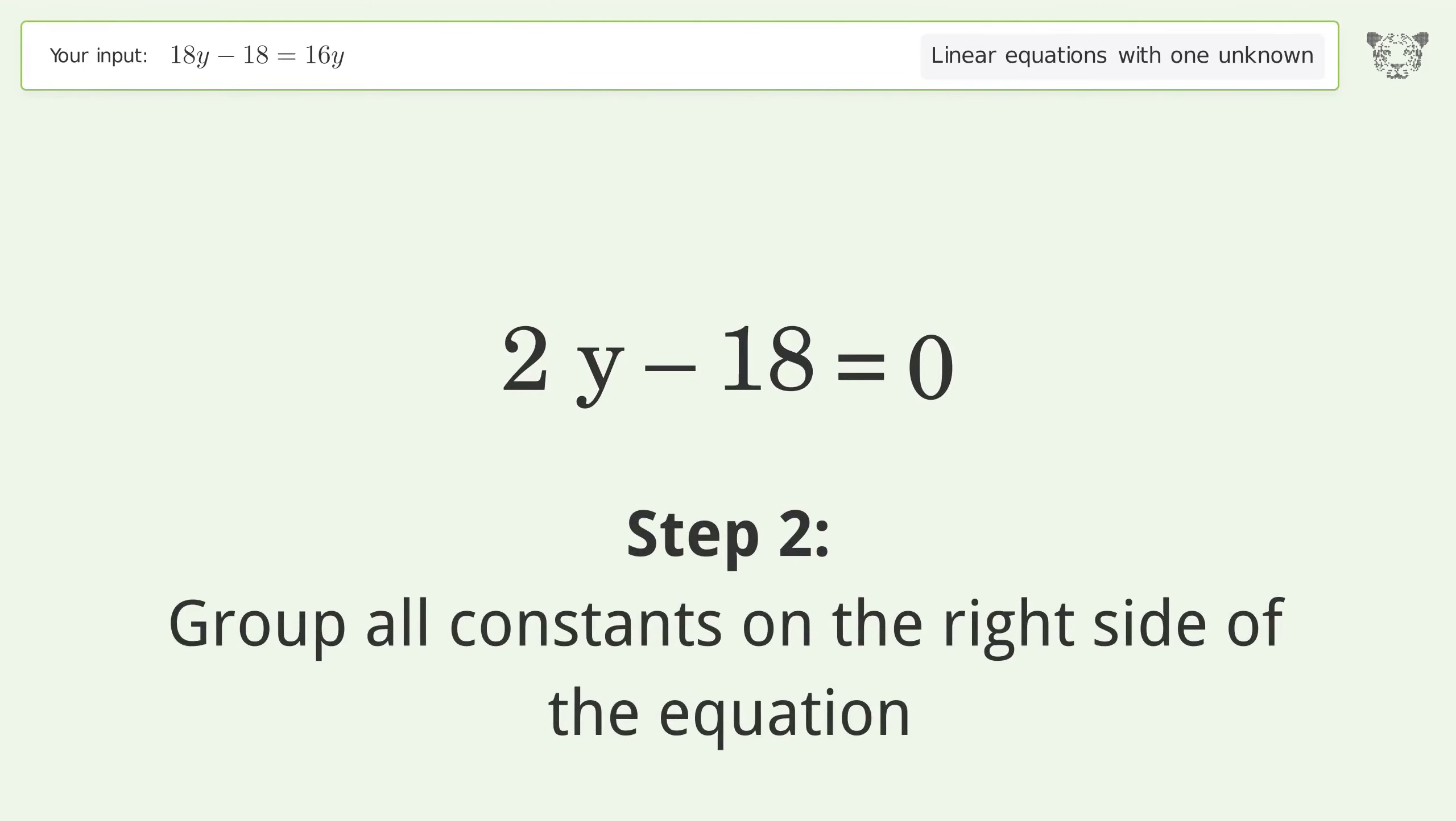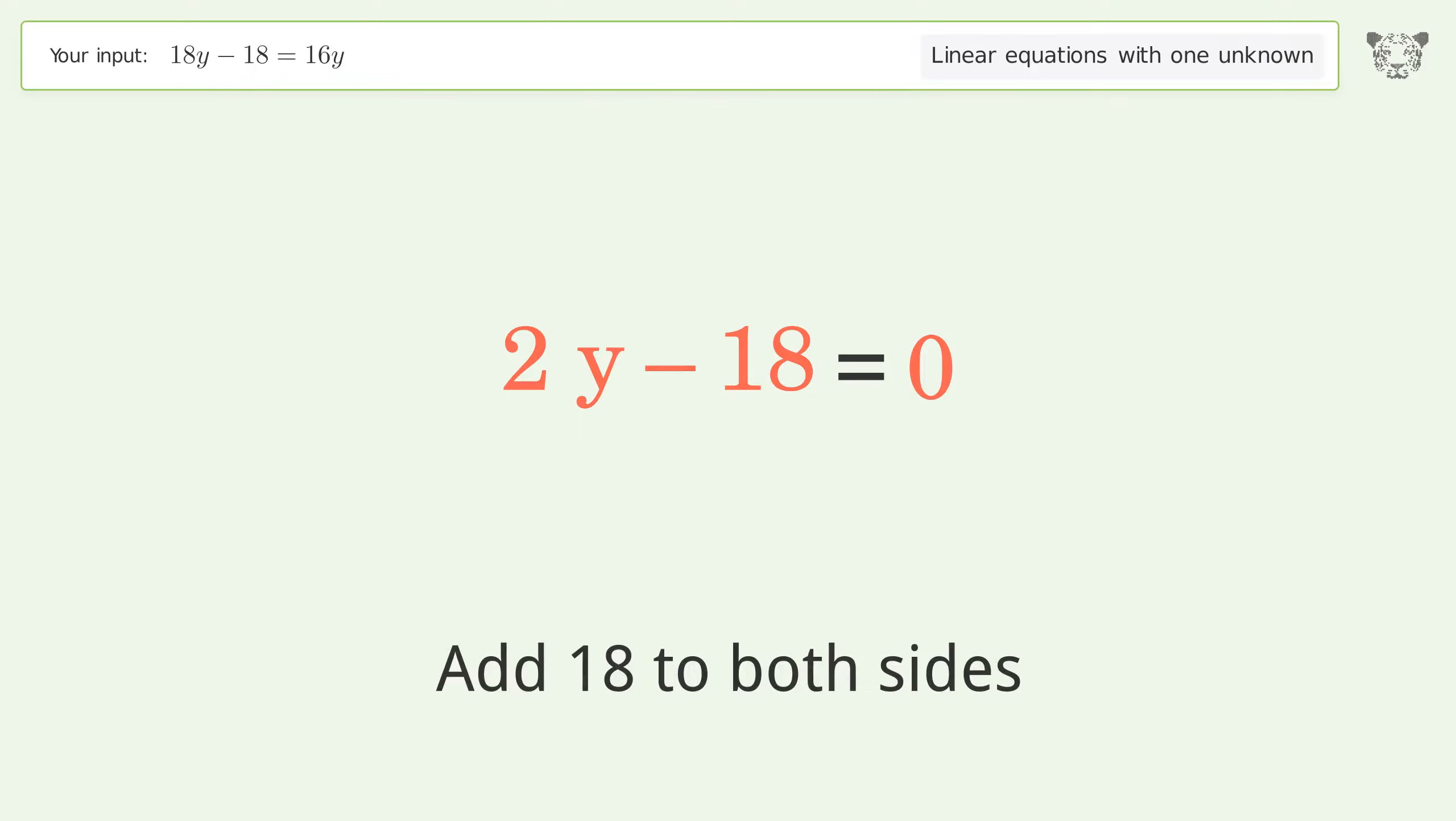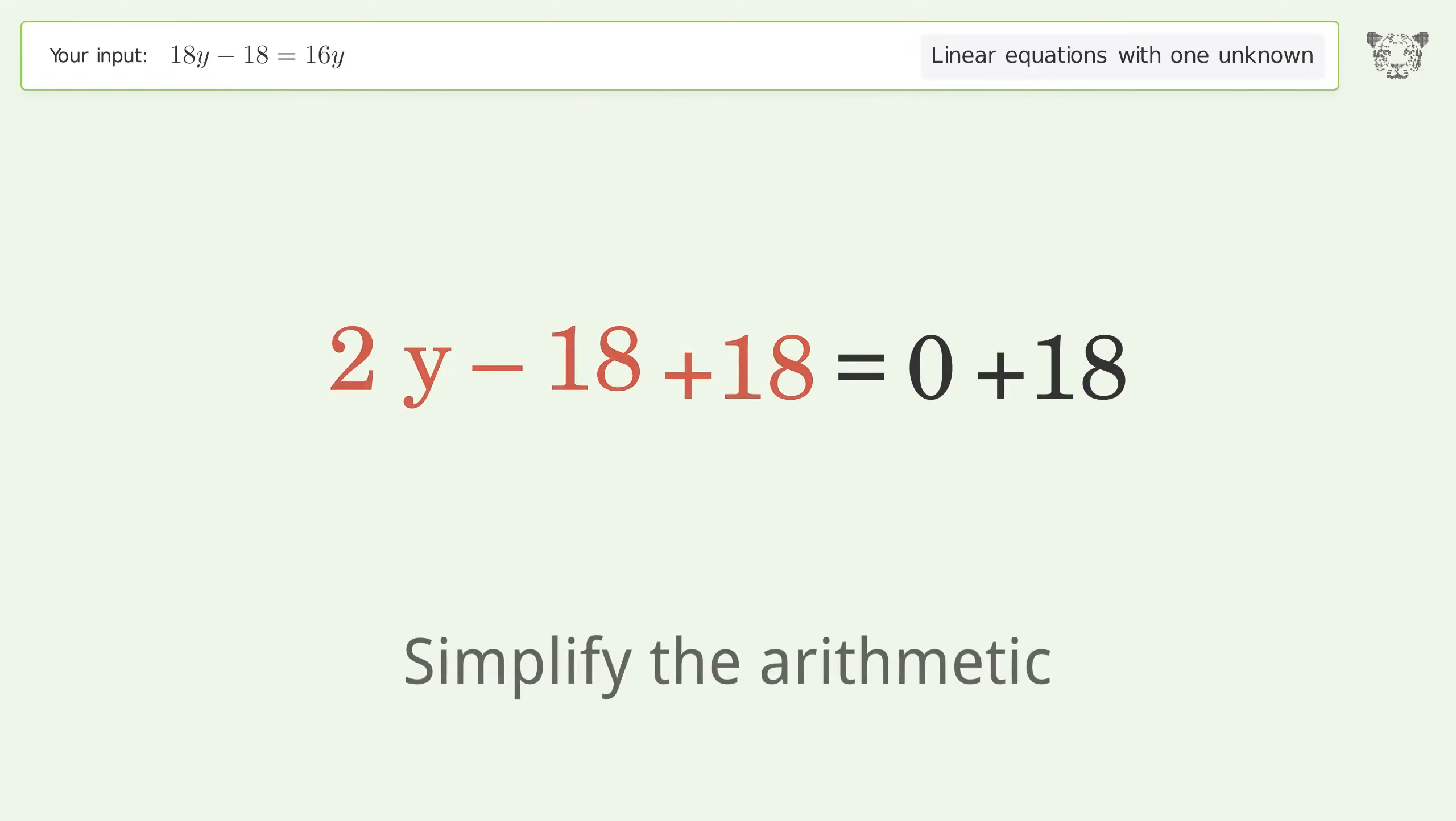Group all constants on the right side of the equation. Add 18 to both sides. Simplify the arithmetic.